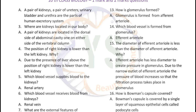Where are kidneys located in our body? A pair of kidneys are located on the dorsal side of the abdominal cavity, one on either side of the vertebral column. The position of the right kidney is lower than the left kidney. Why? Due to the presence of the liver above, the position of the right kidney is lower than the left kidney.